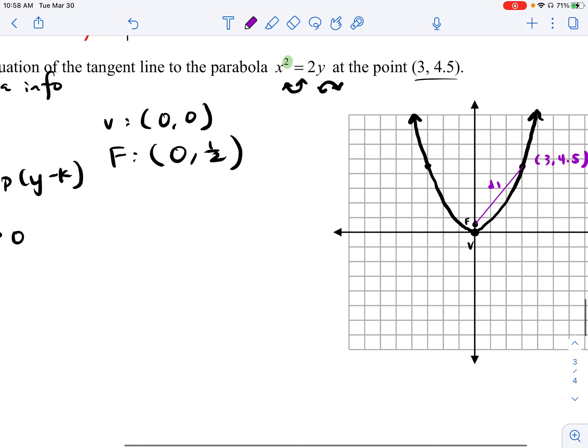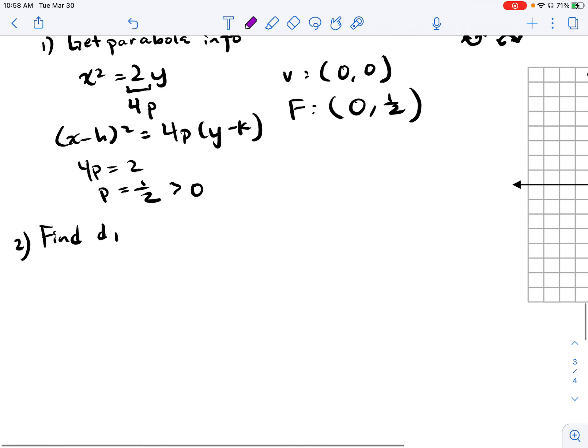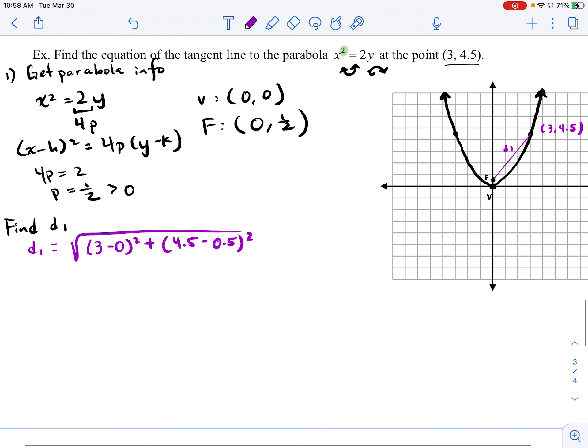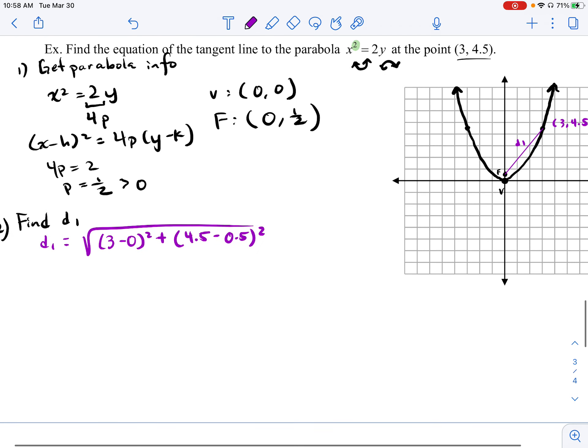We're just going to use the distance formula. So D1 equals the square root of (3 - 0)² + (4.5 - 0.5)². All I'm doing right now is the distance formula between these two points, my point of tangency and my focus.